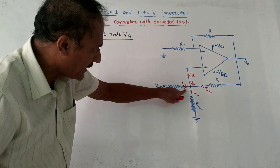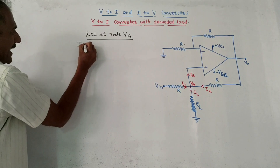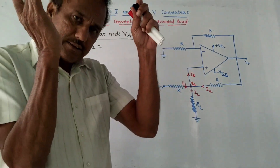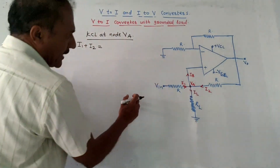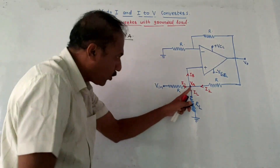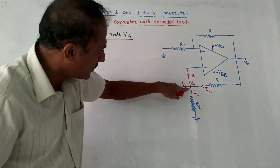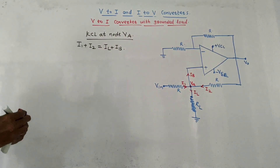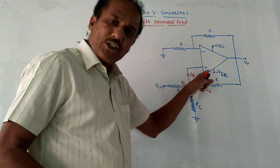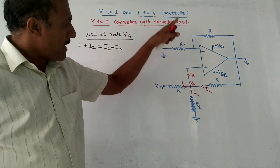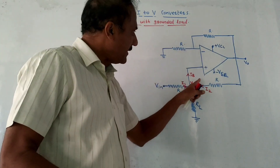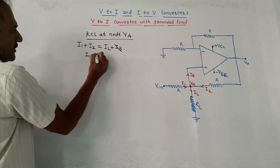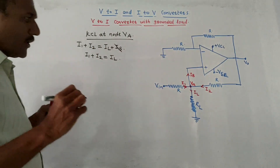Incoming currents — those moving towards this node — are I1 and I2. Outgoing currents — those moving away from this node — are IL and Ib. So: I1 + I2 = IL + Ib. Since the input impedance of the op-amp is very large, bias current Ib is ideally zero and can be neglected. The remaining equation is: I1 + I2 = IL.